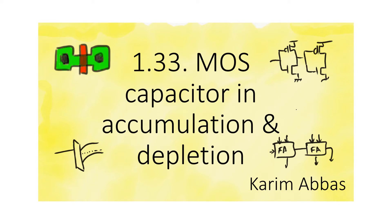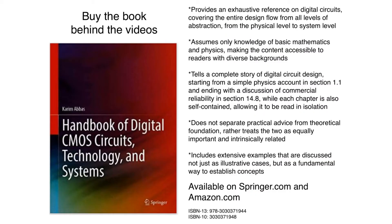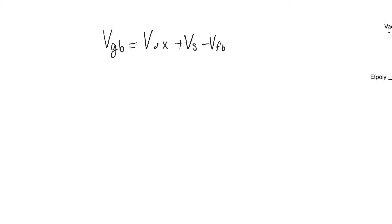Now it's time to consider what happens to the MOS capacitor when we apply an external potential. The basic equation we reached about applying a total potential across the MOS capacitor is that this potential, measured as VGB — where G stands for gate and B stands for body — is going to be divided between the oxide, the surface of the semiconductor, and the flat band potential.